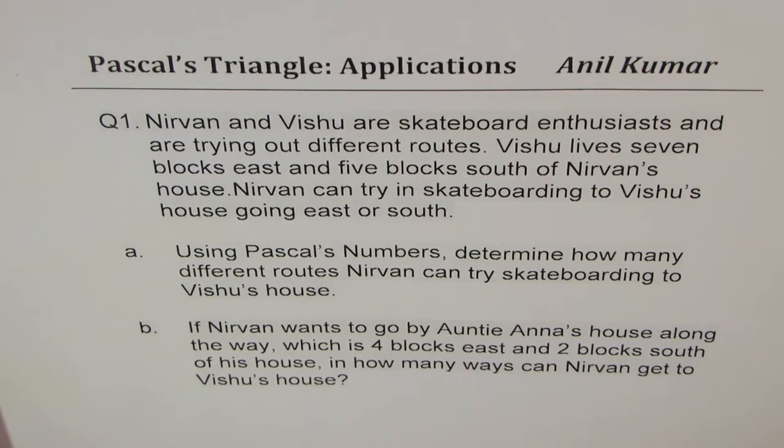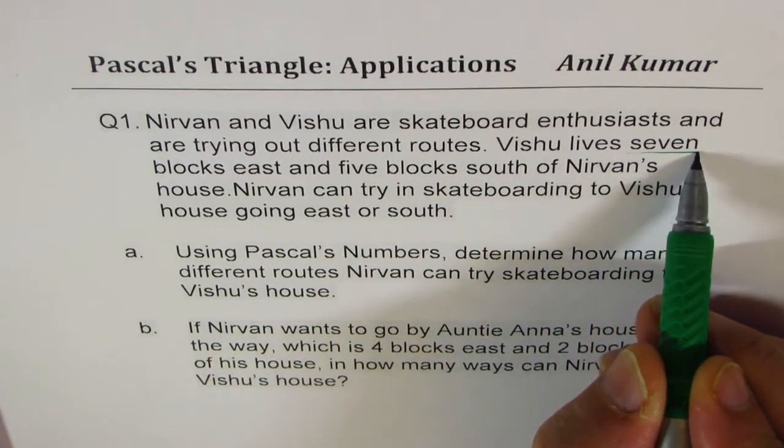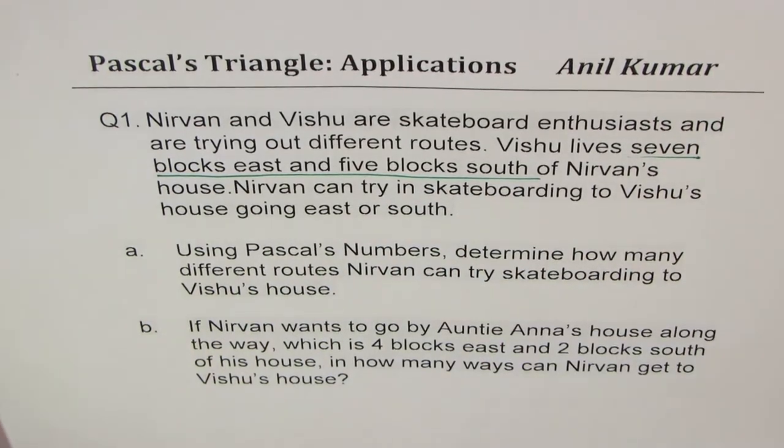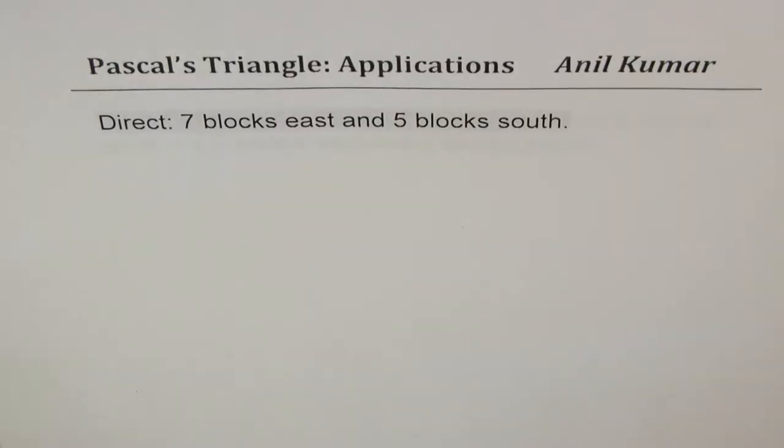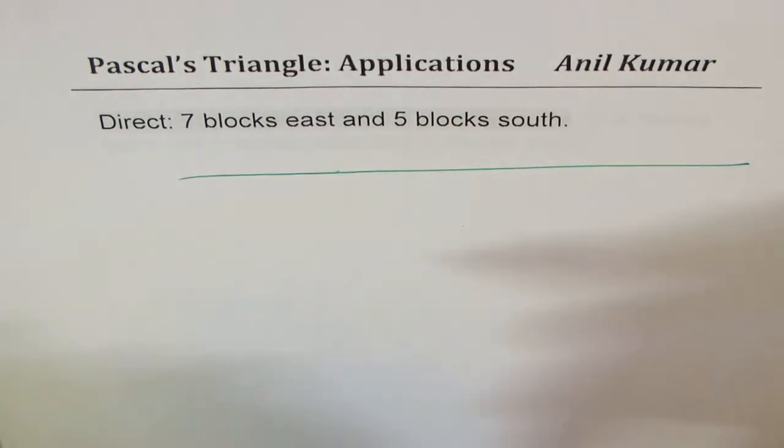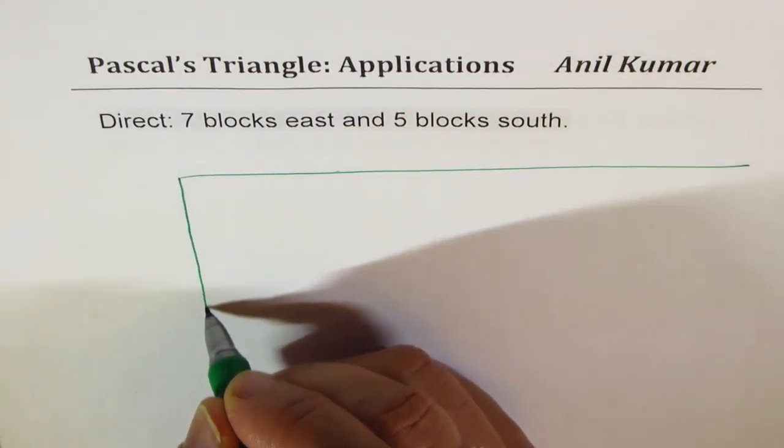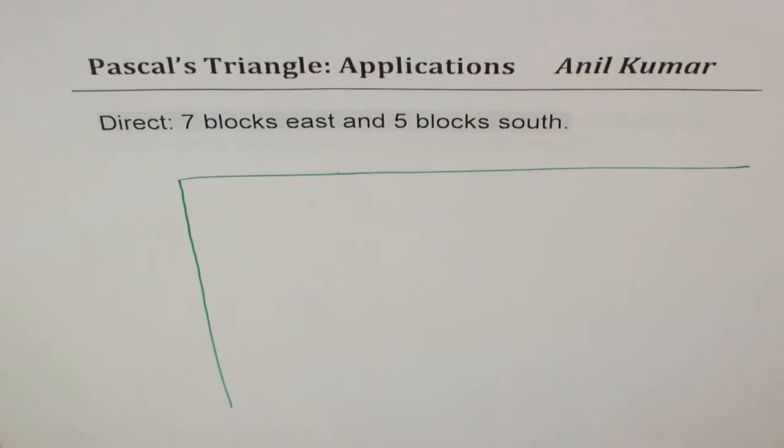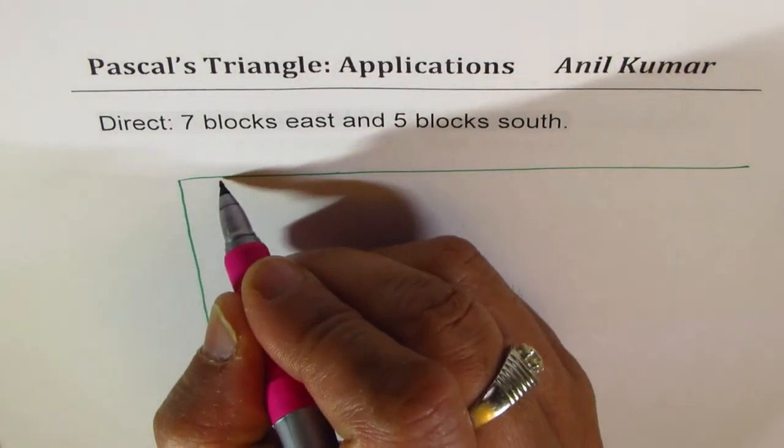So we'll do part A first where Nirvan goes direct to Vishu's house, and we are given that Vishu lives seven blocks east and five blocks south. So I'll begin from here. Let's see how many routes are there when Nirvan goes seven blocks east and five blocks south. Let me draw lines here.